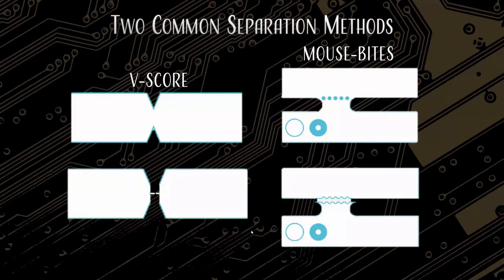What's the difference between a V-score and a mouse bite? A V-score: we're actually taking a saw blade and hitting it from the top and the bottom at a specific depth, leaving just a tiny little piece of material left where it can crack. The best example is like a graham cracker — it has those lines on the top and bottom that leave a little bit of material, just enough for you to crack it. That's exactly what V-score is with circuit boards.